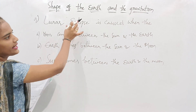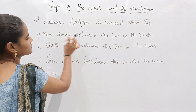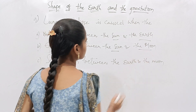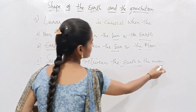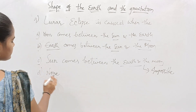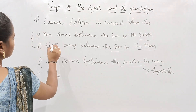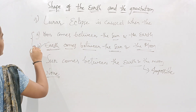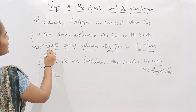Option A, the moon coming between the sun and the earth, describes a solar eclipse, not a lunar eclipse. Option B means the earth is placed between the sun and the moon. Option C — the sun coming between the earth and the moon — is impossible. So Option B is the correct answer: a lunar eclipse is caused when the earth comes between the sun and the moon.